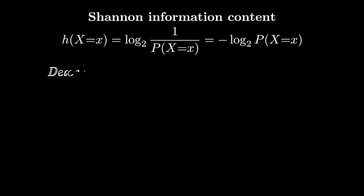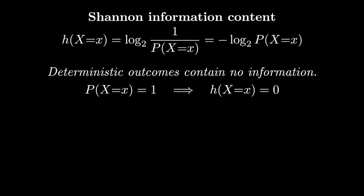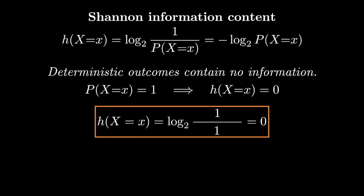So let's convince ourselves that Shannon's definition has these properties. First, let's look at deterministic outcomes. Determinism means that the probability of an outcome is one, and so then we're looking at log of one over one, which is of course zero. So deterministic outcomes don't have any information content.